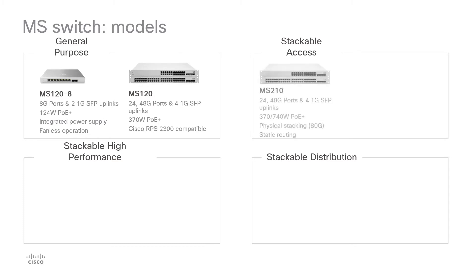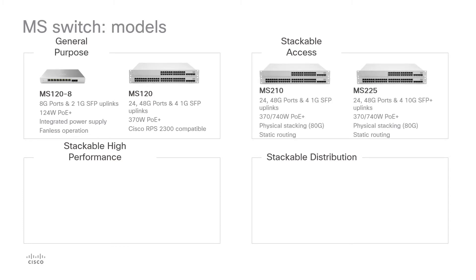The MS-210 and MS-225 are frequently positioned as stackable access switches for branch and small campuses. Both come with 24 or 48 port configurations and power supplies for different PoE needs. They feature the ability to physically stack in a ring with 80G of stacking bandwidth in the backplane. Both the MS-210 and MS-225 are capable of performing static routing. The MS-210 has four 1-gigabit SFP uplinks, while the MS-225 has four 10-gigabit SFP+ uplinks.